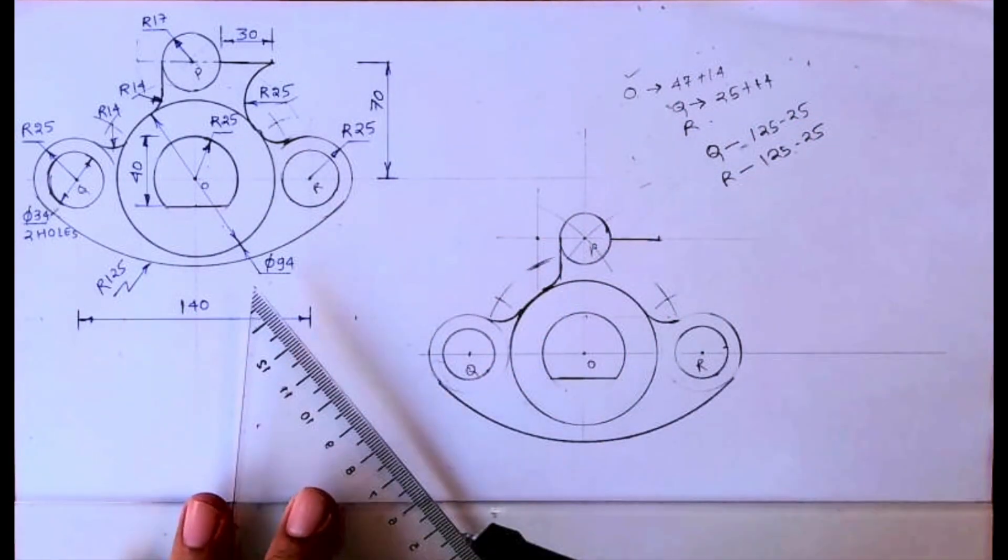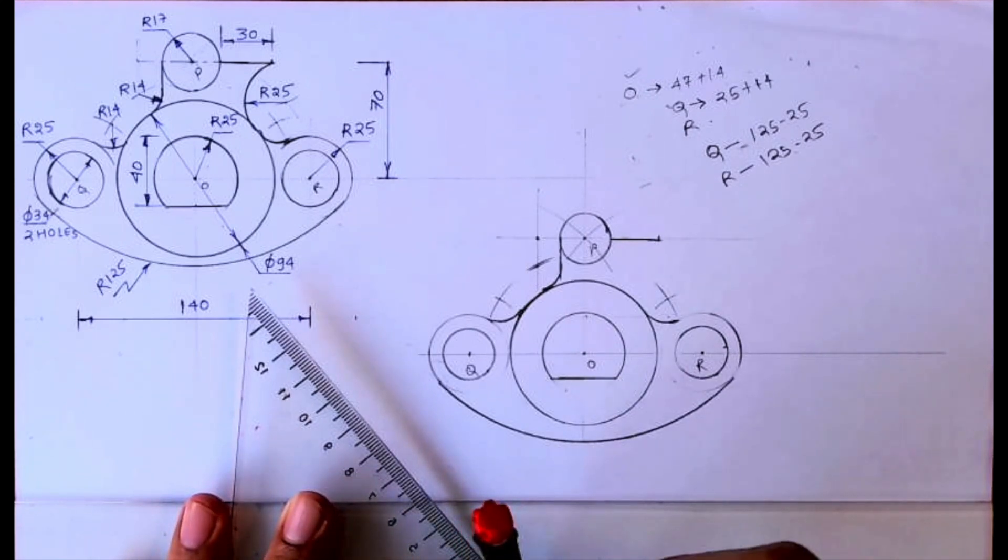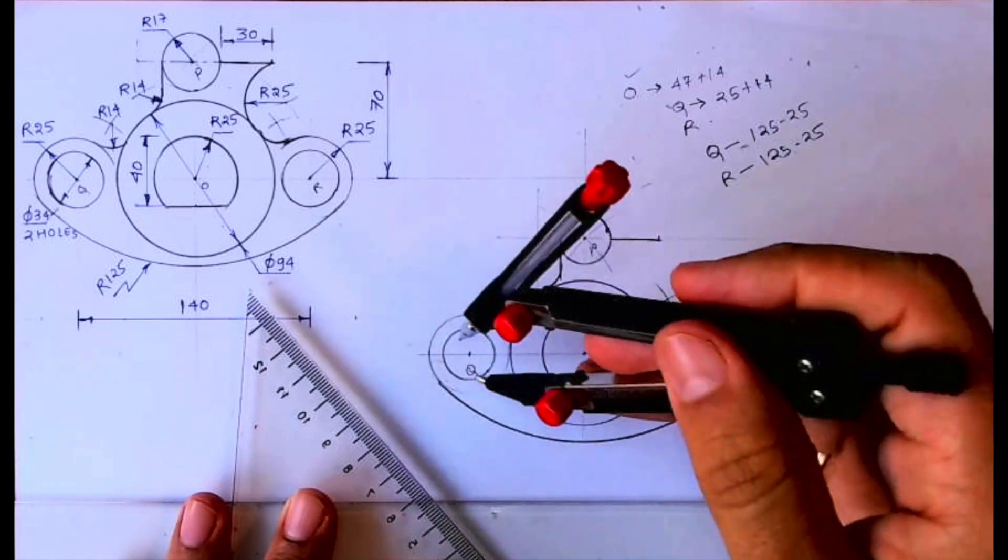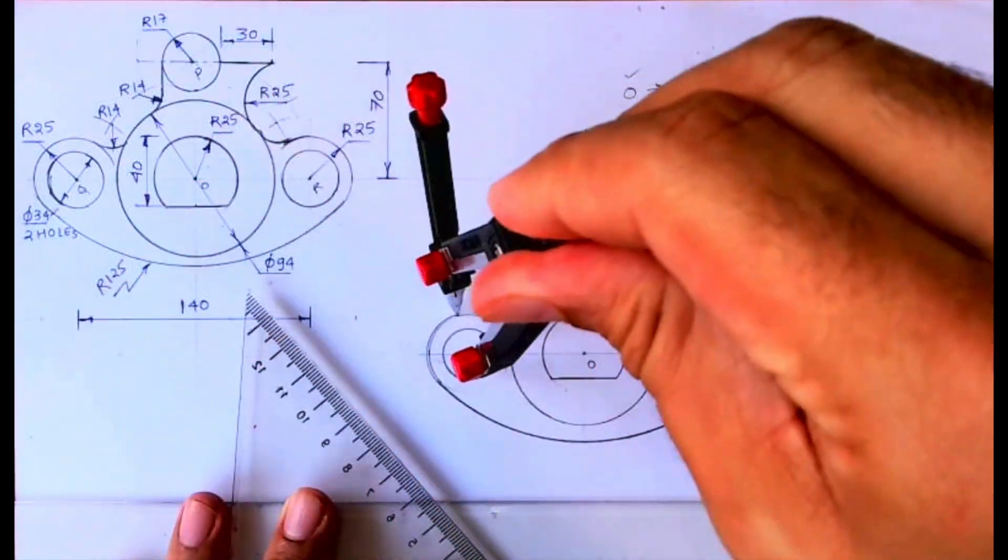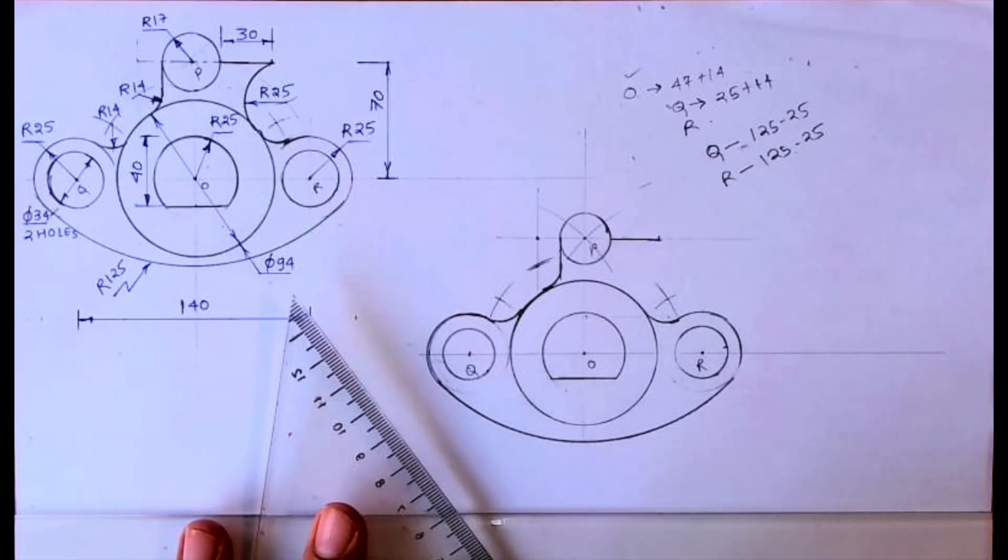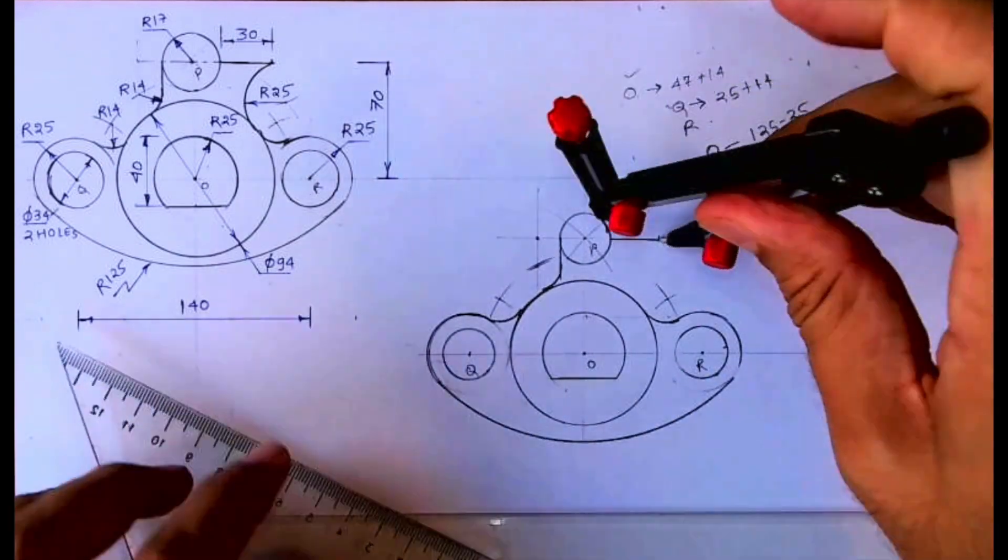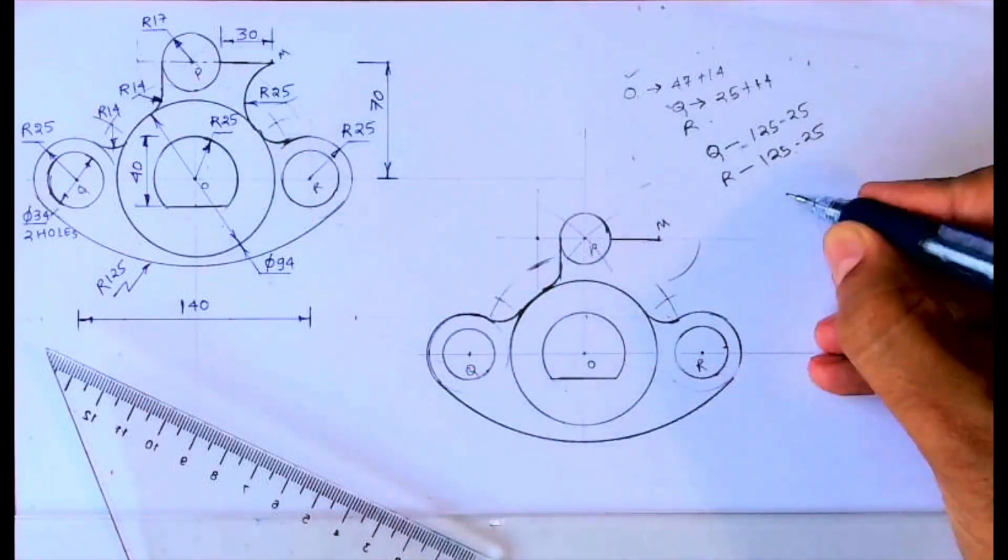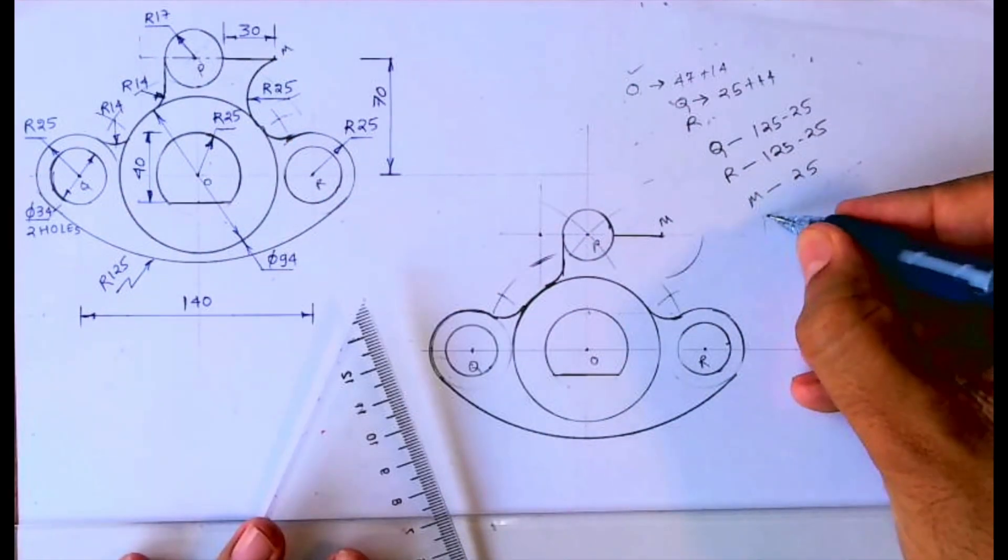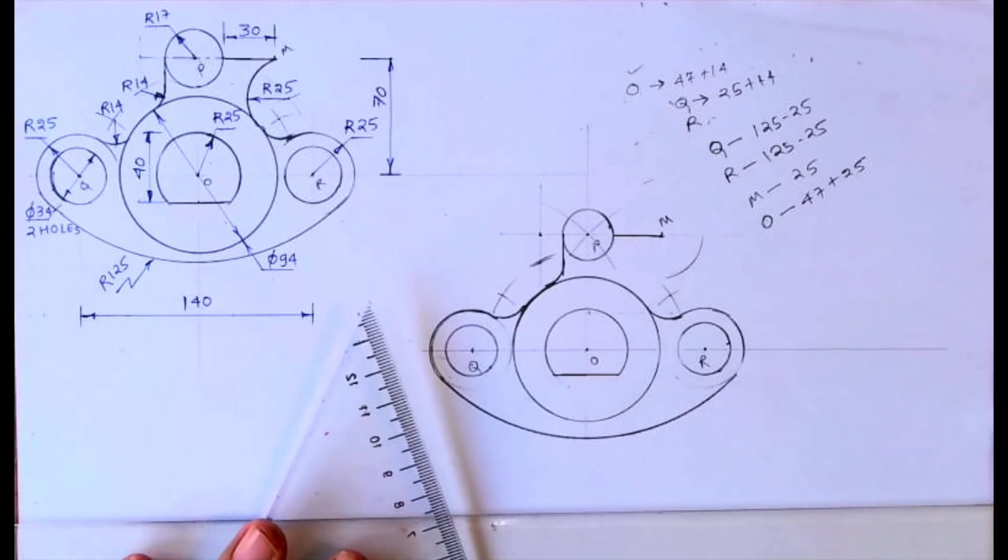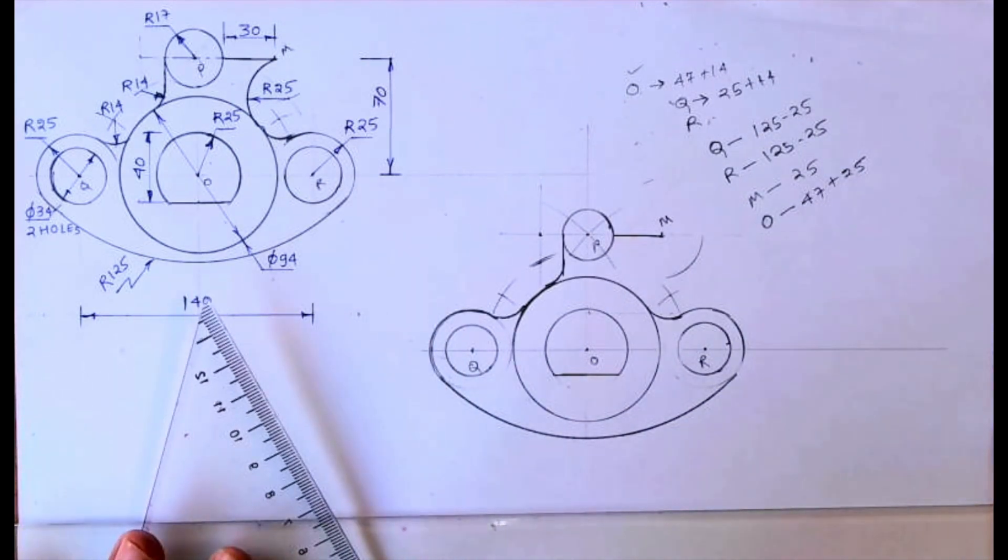Now we need to draw radius 25. So first I'm drawing this circle dark. Whatever is visible, that should be dark. Now to draw that radius 25, from that point we can draw radius 25. So that point is, let's say M. So from M we cut 25, and from O we need to cut how much? 47 plus 25. Wherever it will cut, from that point we can draw radius 25.